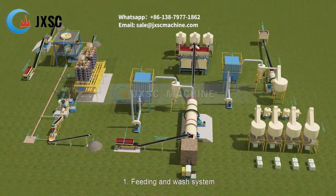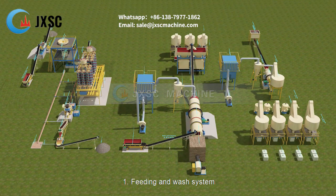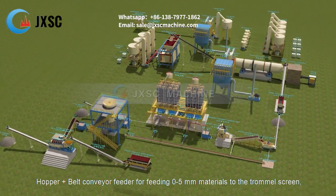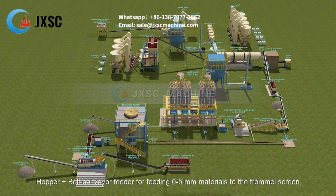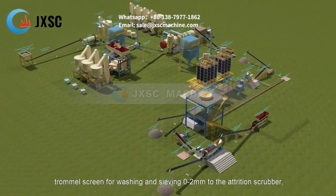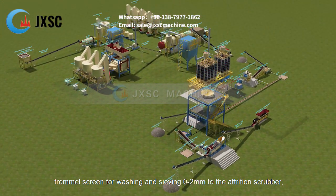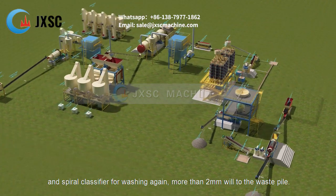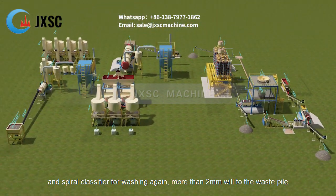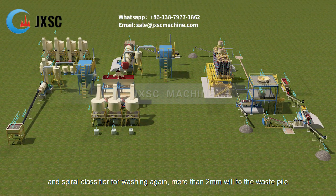1. Feeding and wash system. Hopper plus belt conveyor feeder for feeding 0 to 5 millimeters materials to the trommel screen. Trommel screen for washing and sieving 0 to 2 millimeters to the attrition scrubber and spiral classifier for washing again. More than 2 millimeters will go to the waste pile.